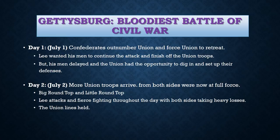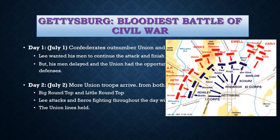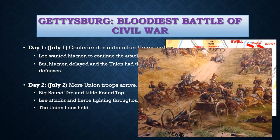On day two, July 2nd, more Union troops arrived — and this was the turning point where both sides were now at full force. There was fierce fighting on two hills near Gettysburg: Big Round Top and Little Round Top. Lee attacked and both sides took heavy losses throughout the day. The Union troops, however, held their lines and did not fall back, remaining strong.